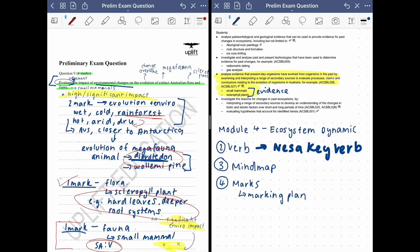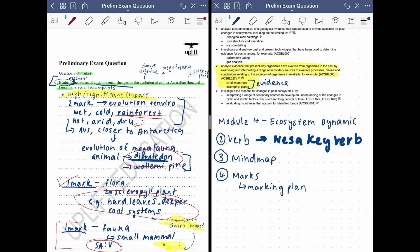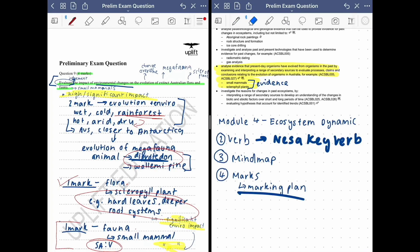And then step number four was breaking the question marks down into a marking plan. This can be either in your head or at the top of the questions. This way by following these four steps you have a step-by-step approach to all your exam style questions for biology and for any other subject as well. Good luck and happy studying everyone!